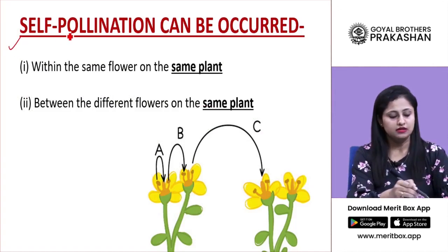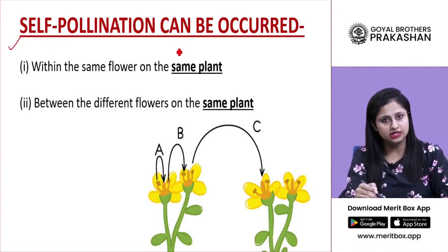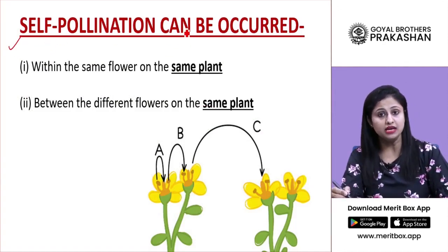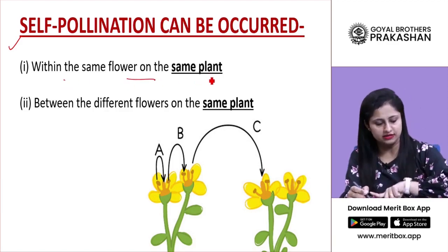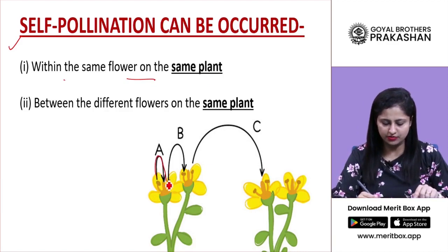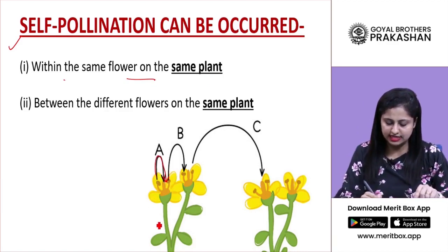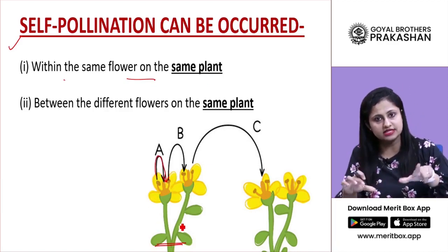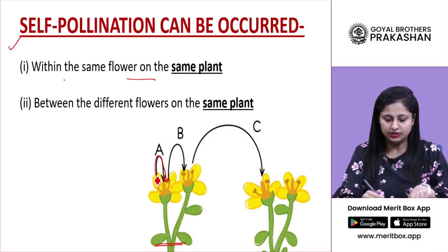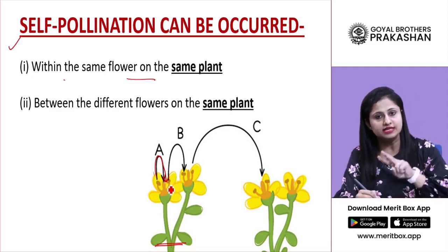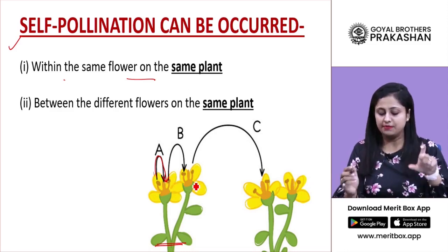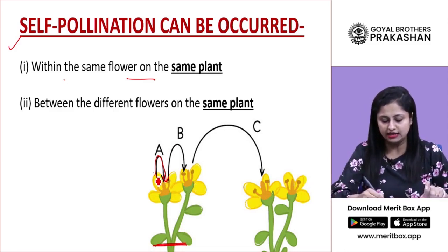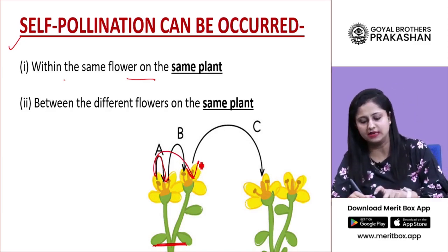Self-pollination can occur within the same flower on the same plant — this is the first case. The second case is between different flowers but on the same plant.